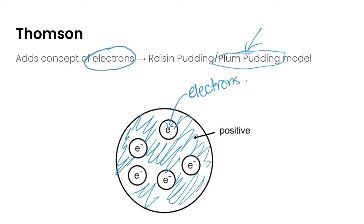Plum pudding is actually a very popular dessert still to this day in England. You can picture this as maybe like a chocolate chip cookie or a blueberry muffin, where all of the dough is the positively charged space in an atom, and then the chocolate chips or the blueberries are the electrons distributed throughout the cookie or the muffin.